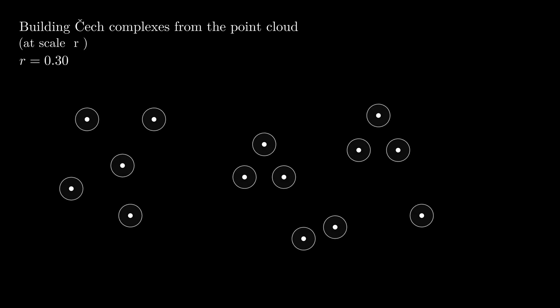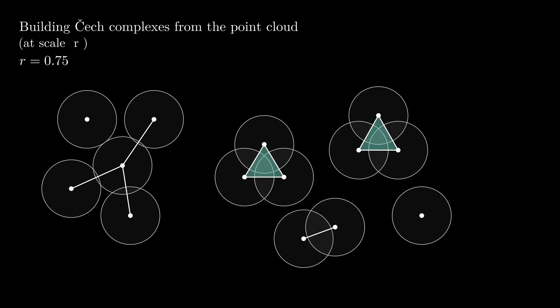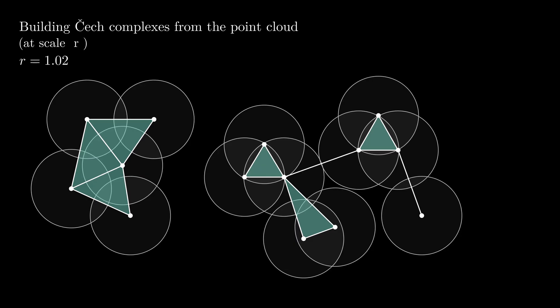Now that we know what simplicial complexes are, the next question is, how do we actually build them from data? Suppose we have a set of points. One approach is to grow a ball of radius r around each point. If two balls overlap, we connect the two points with an edge. If three balls all overlap, we fill in a triangle. If four overlap, we add a tetrahedron. And so on. The collection of all these simplices at scale r is called the Čech complex.